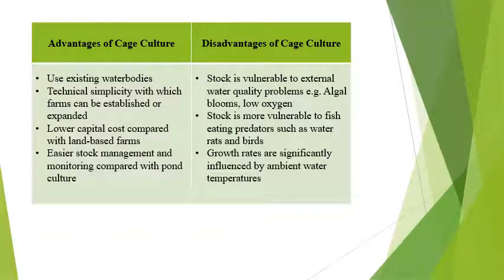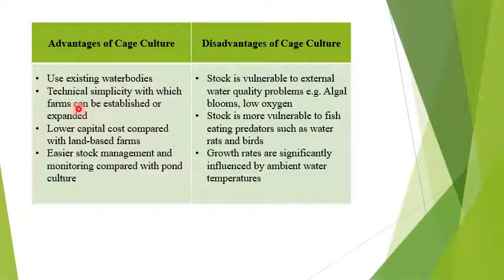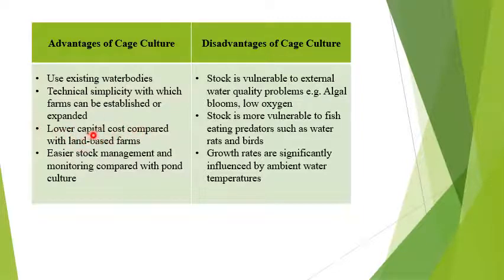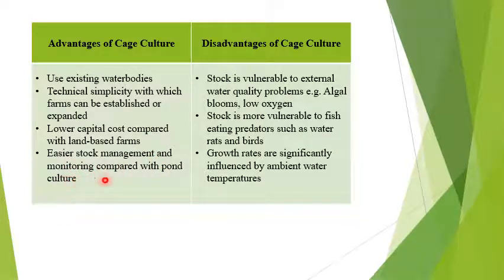Advantages of cage culture: it uses existing water bodies — whatever water is available can be used. It can be established and expanded in any water body. It requires lower capital cost compared to large land-based farms where everything must be managed. Stock management and monitoring are easier compared with pond culture methods.